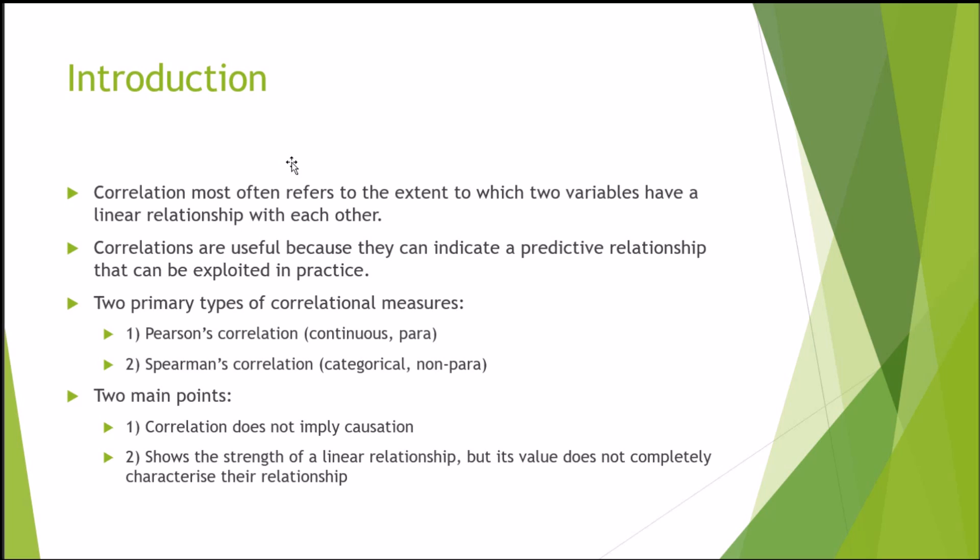There are two primary points that one needs to take note of when conducting correlations. First, correlation does not imply causation. Just because there is a correlation between two variables, it doesn't mean that one variable for sure influences another variable. It just means that they have a relationship and can be influenced together by another variable which you don't know of.